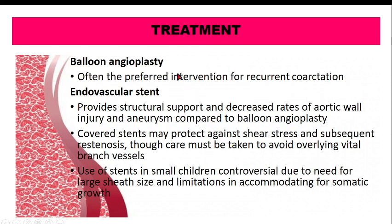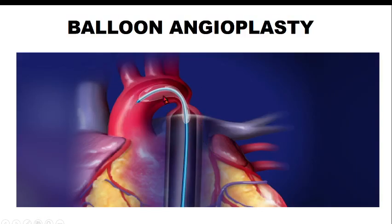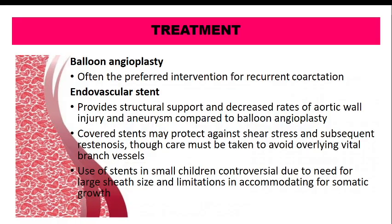The second option is balloon angioplasty: a catheter with a balloon is introduced, and at the site of coarctation the balloon is inflated to widen the narrowed area. This is used for recurrent coarctation — when coarctation recurs after a previous surgical repair.